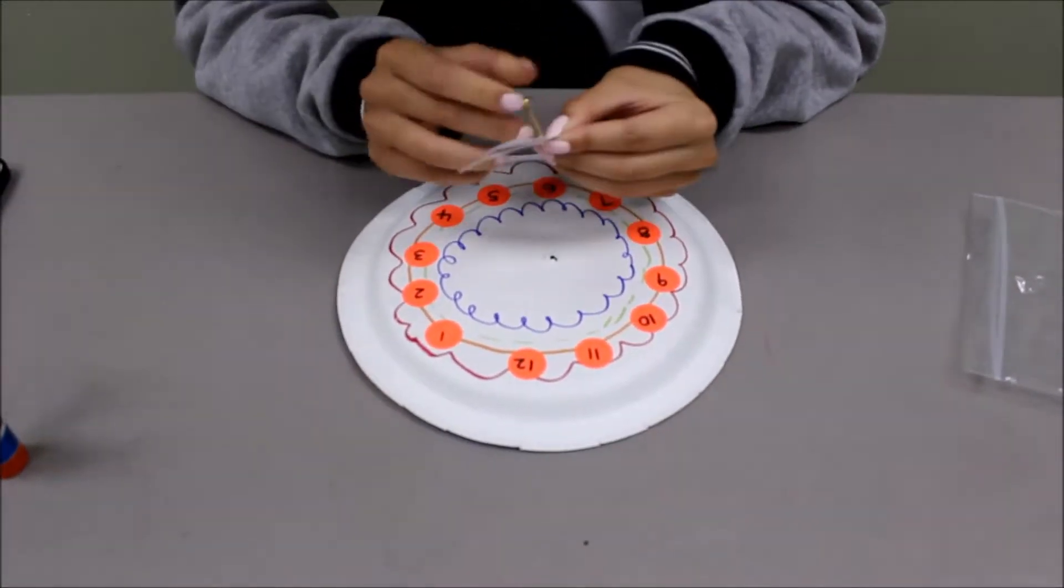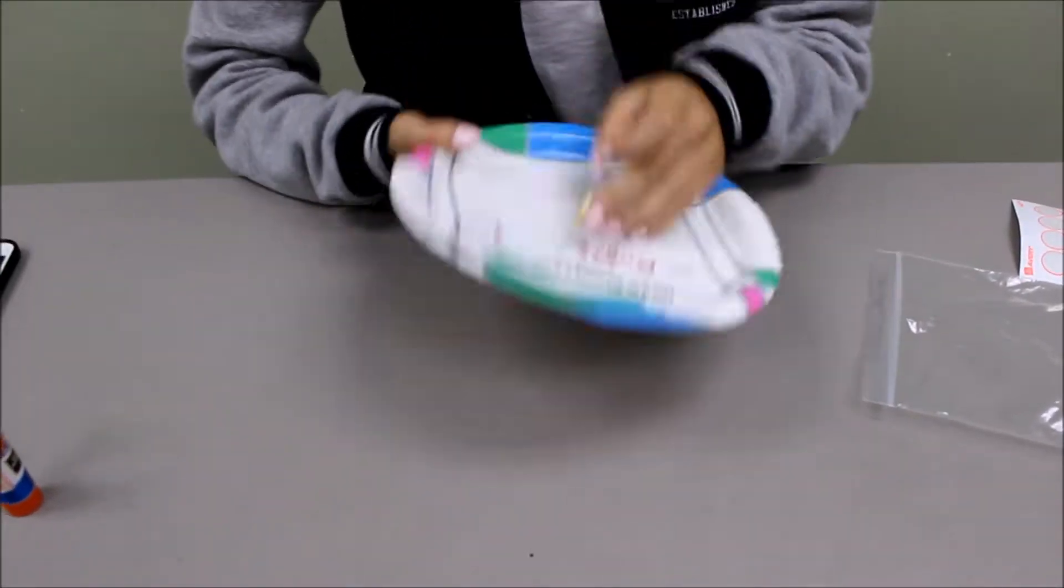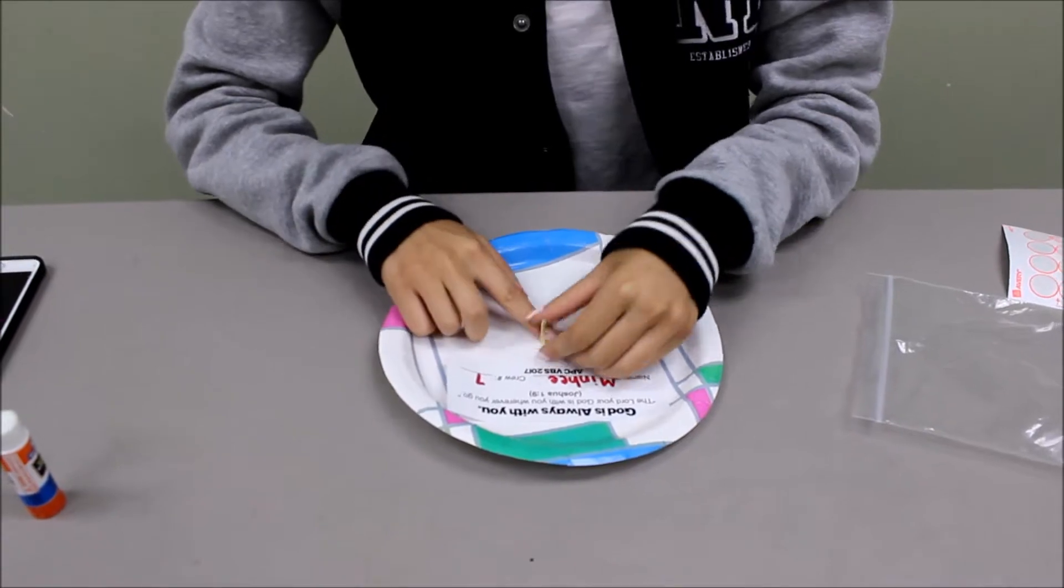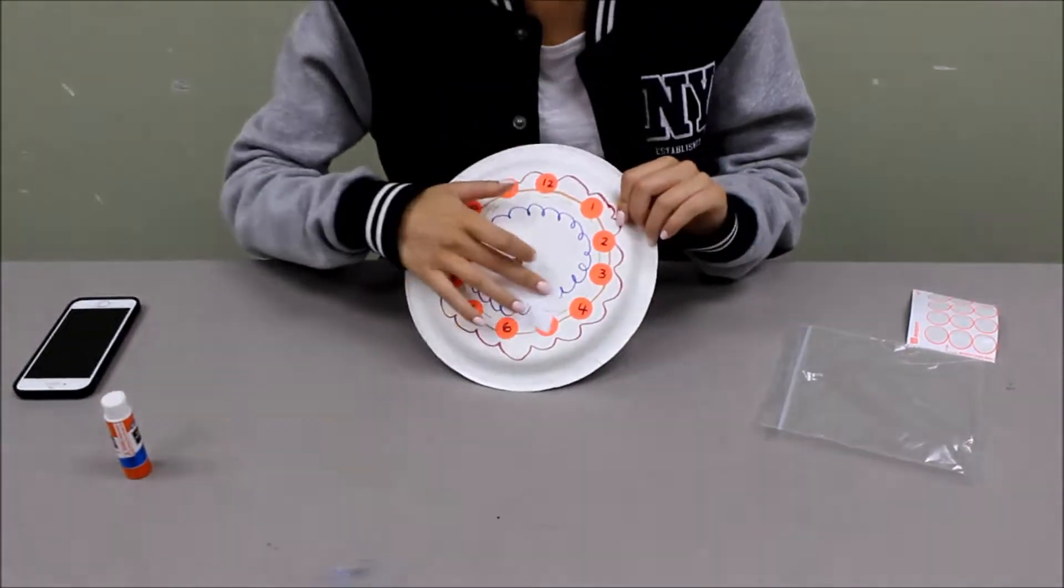So you're just going to put the paper fastener through the holes of the clock hands and through the plate. Flip it, spread the two sides, push it down, and there's the clock.